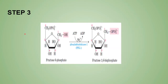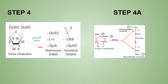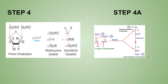Step 4: fructose-1,6-bisphosphate in the presence of aldolase is split into two substances — DHAP (dihydroxyacetone phosphate) and glyceraldehyde-3-phosphate (GAP). For glycolysis we only need GAP. Step 4A: phosphotriose isomerase converts DHAP into GAP. So after steps 4 and 4A we get two molecules of glyceraldehyde-3-phosphate. Steps 4 and 4A together are called the splitting phase.